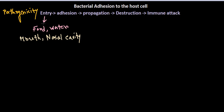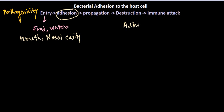Once the microorganism has entered the host body, the second important step it needs to achieve is adhesion of its surface to the host cell. In this video we'll be emphasizing this adhesion part. This adhesion of the bacterial cell inside the host body is very important, and it can be achieved via three different processes.